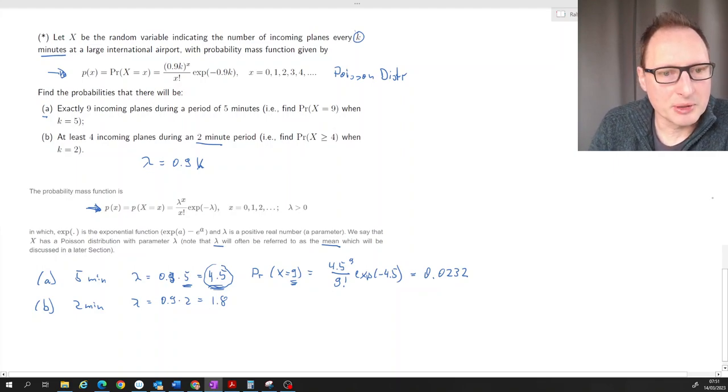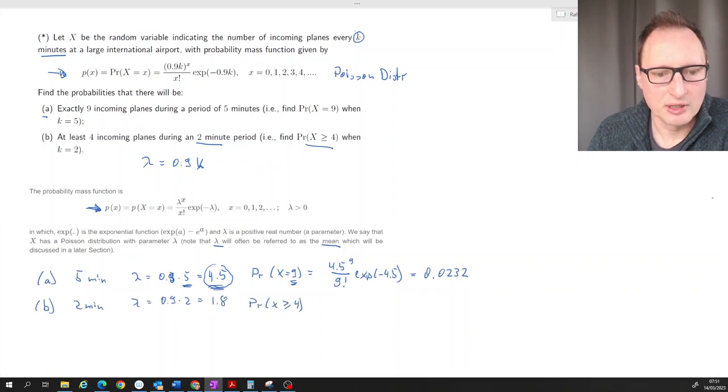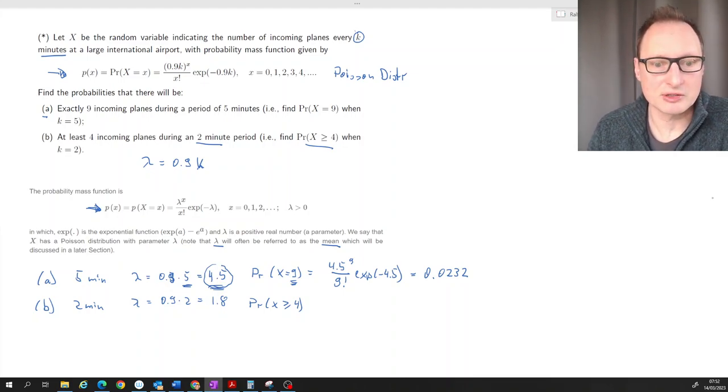And the probability we are asked for is probability that x is larger or equal to 4. Now really we're having an infinite number of possible outcomes because that's the probability of 4 plus the probability of 5 plus the probability of 6 and so forth. The way to calculate this is to recognize that this is all outcomes but for 0, 1, 2, and 3.